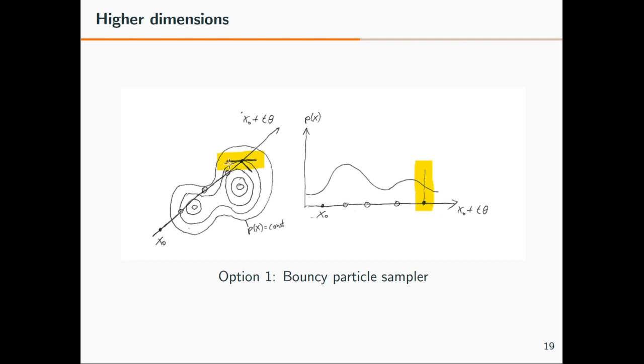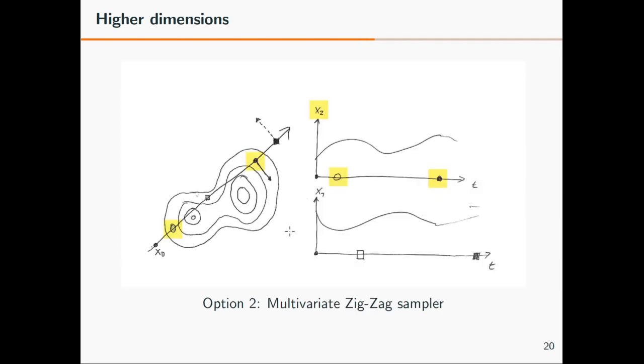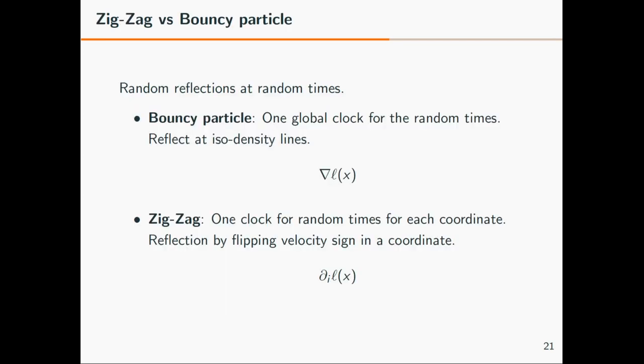But we have two choices. The first choice is the choice of the bouncy particle sampler, where we reflect at isodensity lines. So where the density is constant then we reflect like a billiard. That's one possible choice. The other choice is the choice of the zigzag sampler, the multivariate one. We don't have a single timer which tells us where we reflect. We have for each coordinate an independent clock which proposes events. If we move on that line we propose independently events to do a direction change on the round coordinate or on the square coordinate. Depending on which one of these is successful first, we flip the sign in one or the other.